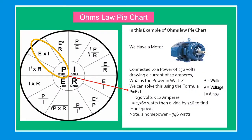Ohm's Law pie chart example: we have a motor connected to a power supply of 230 volts, drawing a current of 12 amperes. What is the power in watts? We can solve this using the formula: P equals E times I equals 230 volts times 12 amperes equals 2,760 watts. Then divide by 746 to find the horsepower. Note that one horsepower is equal to 746 watts.